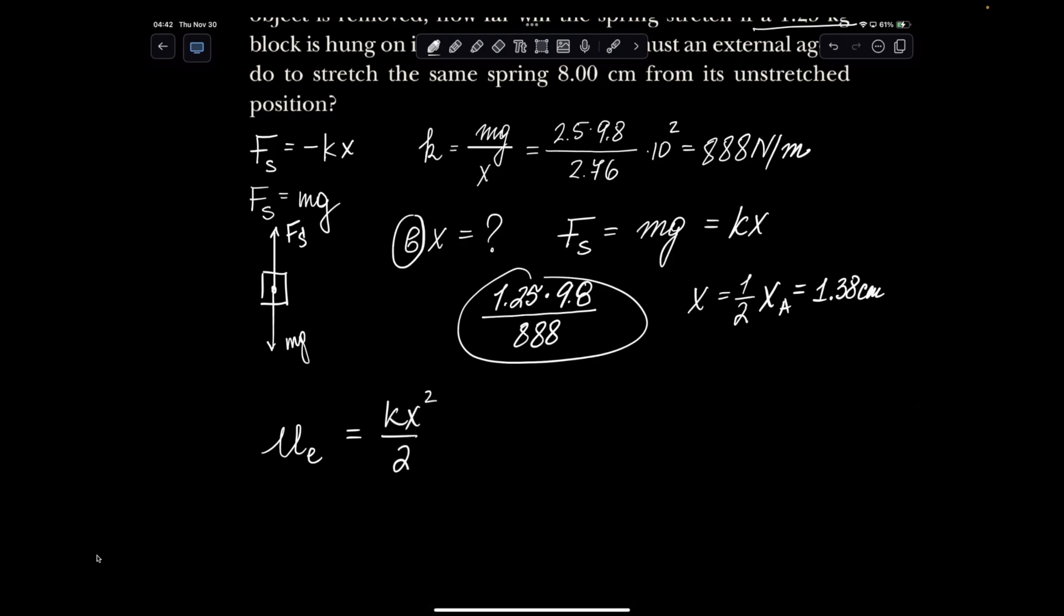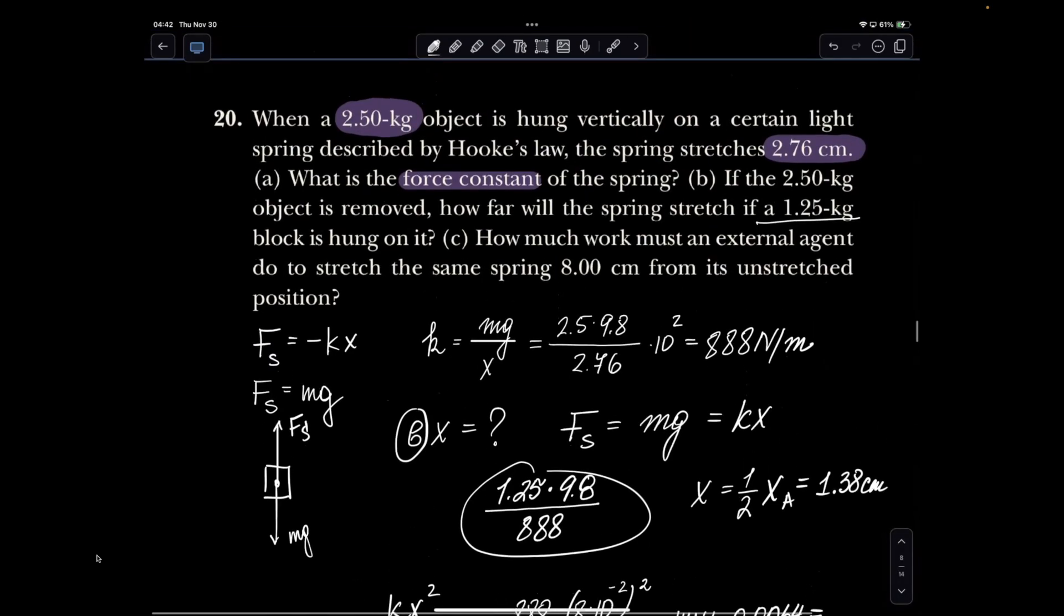So what we're going to look at is 888 as our k, 8 times 10 to the negative second in squares over 2. So it's 444 times 0.0064. That is going to be 2.84 joules. And those are the answers to number 20.